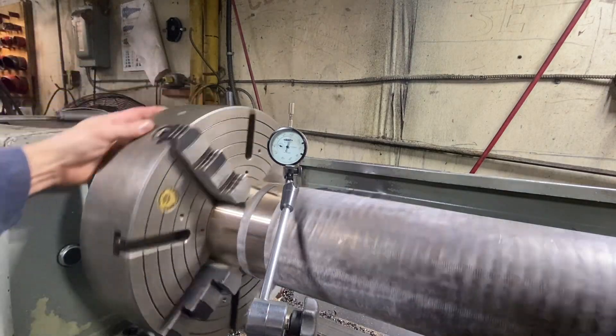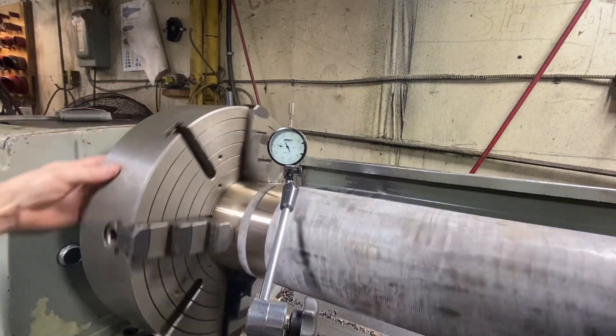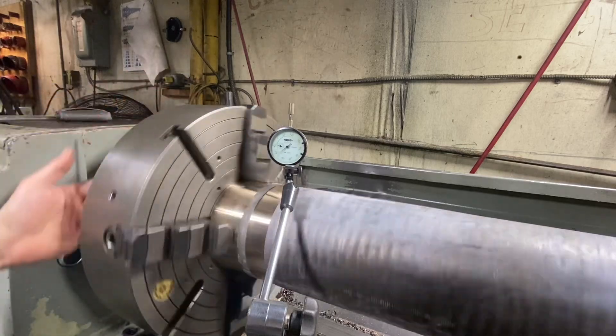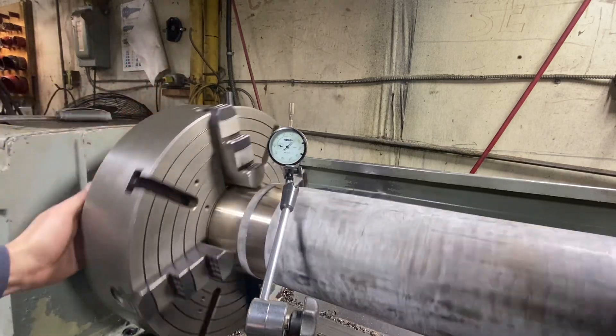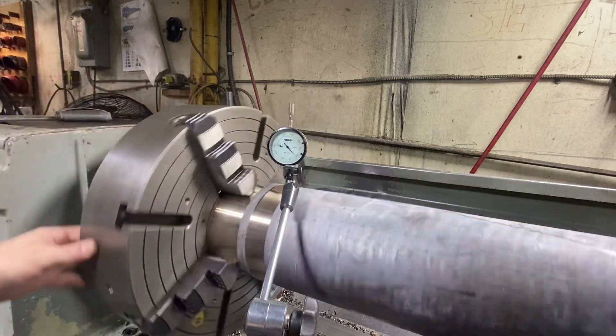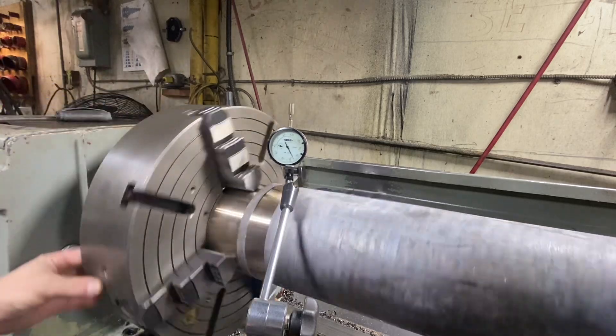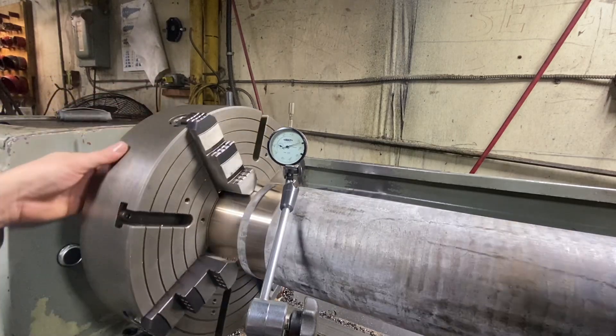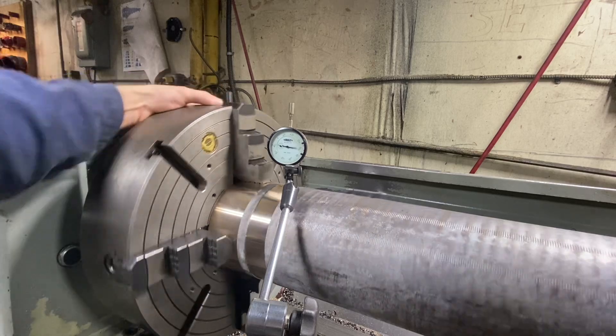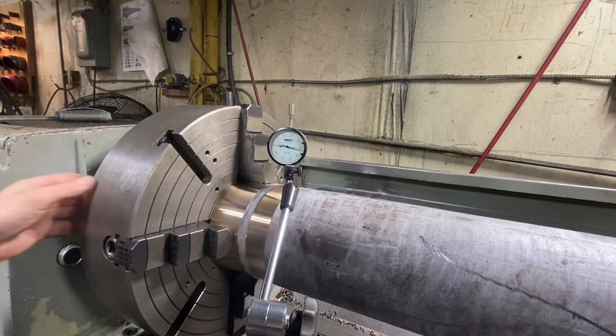Anyway, so there we go. We got a full revolution, which in this case adds up to 50 thousandths out. So we go up to the high side and go 180 degrees to the low side. If we had a full rev, then we have to back off an eighth of a turn.